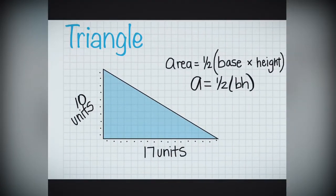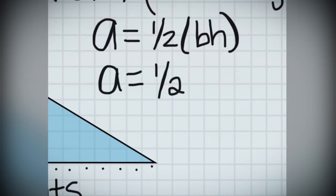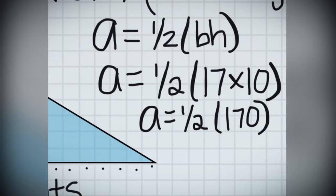Now, we're going to fill in what we know in order to solve. Area will equal one-half of the base, 17, times the height, 10. Order of operations says do what's in the parentheses first, so we're going to find half of 170. Then we do the math of finding half of 170, which is dividing it by 2, and we get 85 units squared.